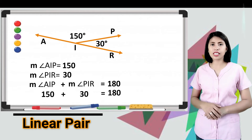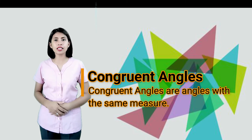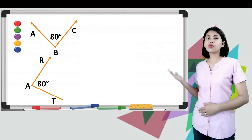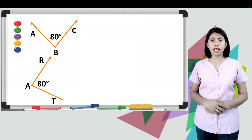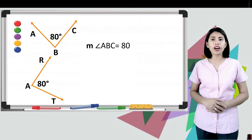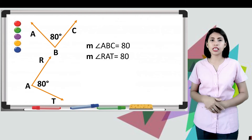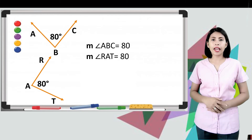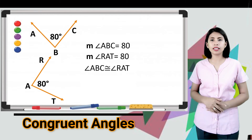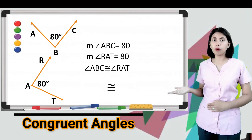The fifth angle pair is congruent angles. Congruent angles are angles with the same measure. Consider this figure: angle APC and angle RAT, wherein measure angle APC is equal to 80 and measure angle RAT is equal to 80. Since these two angles have the same measure, angle APC is congruent to angle RAT. Take note of the symbol used for congruent.